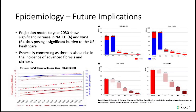The future implications for this, as shown with projected models going into 2030, show that there will continue to be an increased rise in non-alcoholic fatty liver disease and NASH. This poses a significant burden to the U.S. healthcare system, as there will be an increasing rise in advanced fibrosis and scarring in the liver, which will result in cirrhosis — associated with negative healthcare outcomes and increasing burdens to the health system.